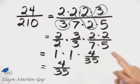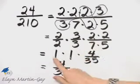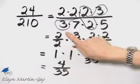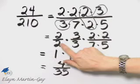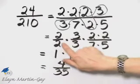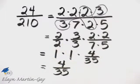To simplify, we're essentially removing factors of 1, and those factors of 1 are represented by the same number in the numerator as in the denominator. So we've simplified, and in simplest form, it is 4 over 35.